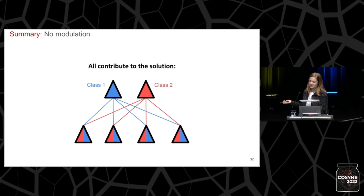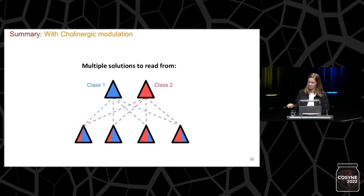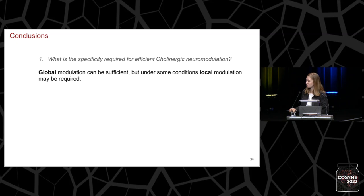To sum up: networks without modulation learn to use the entire population to solve a task, whereas networks trained with cholinergic modulation tend to develop units with more diverse task encodings, which can provide partial solutions to the task, making these networks more robust.